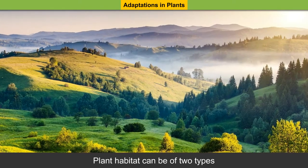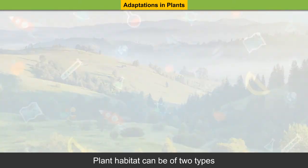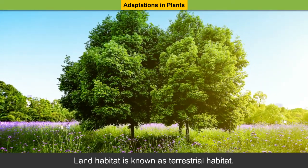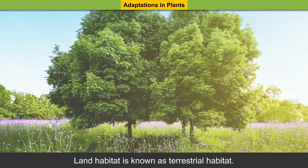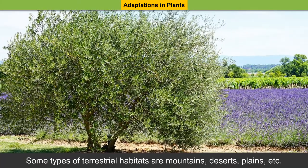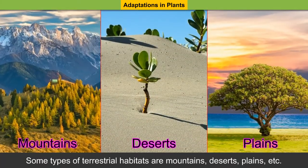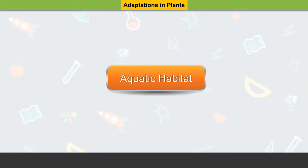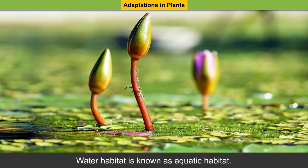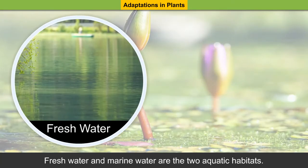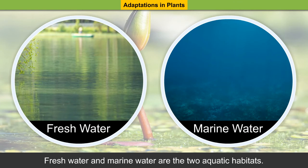Plant habitats can be of two types. Land habitat is known as terrestrial habitat. Some types of terrestrial habitats are mountains, deserts, plains, etc. Water habitat is known as aquatic habitat. Fresh water and marine water are the two aquatic habitats.